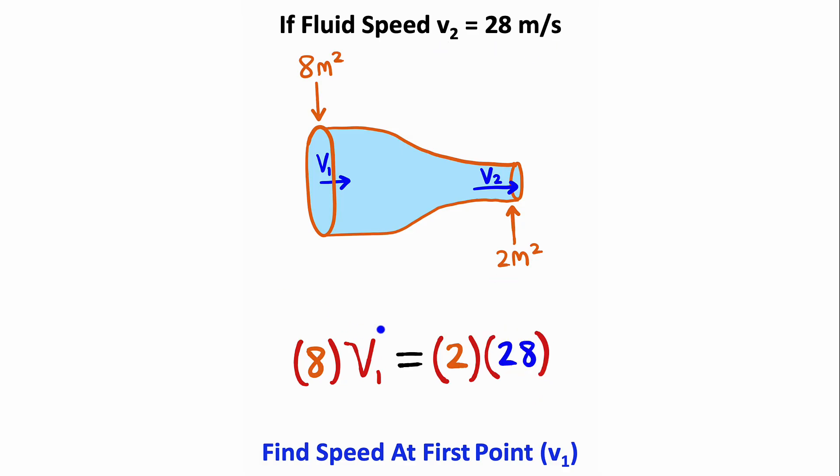Using algebra, I can solve for the unknown velocity. 2 times 28 is 56, and I can divide both sides of this equation by 8 to cancel the 8s on the left side. 56 divided by 8 is 7, meaning the magnitude of the fluid's velocity at this point of the pipe is 7 meters per second.